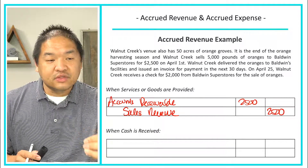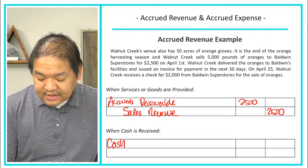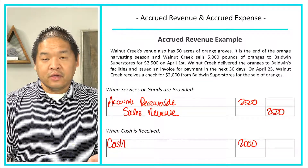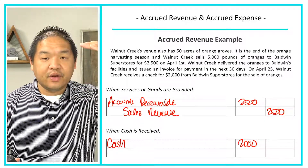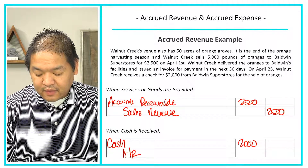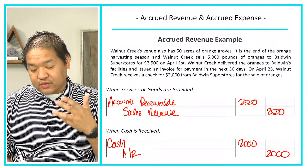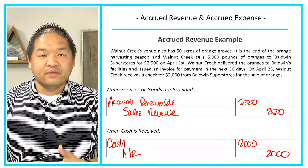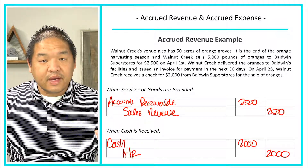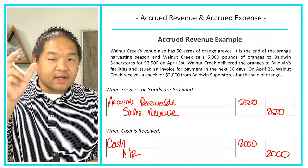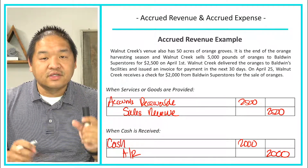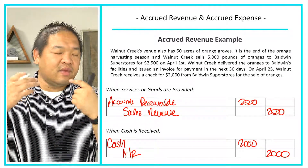On April 25th, Walnut Creek received a check for $2,000 from Baldwin Superstores. We debit Cash for $2,000 since cash is an asset and increasing it is a debit. The customer still owes $500, so we credit Accounts Receivable for $2,000. Accounts Receivable now has a $2,500 debit and a $2,000 credit, leaving a $500 debit balance — meaning the customer still owes us $500.